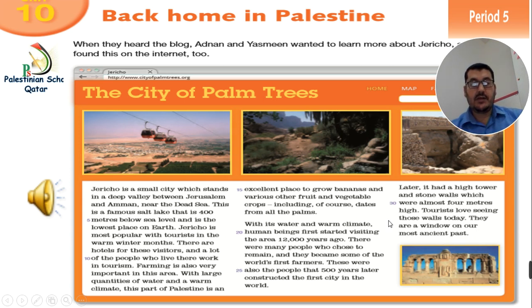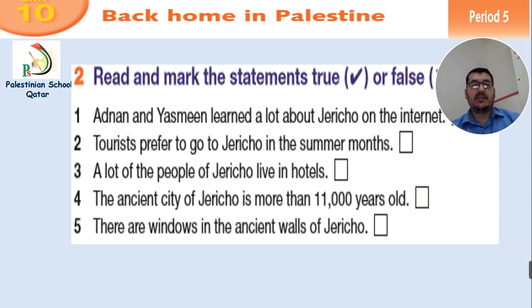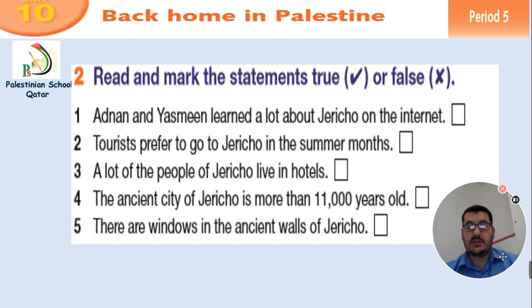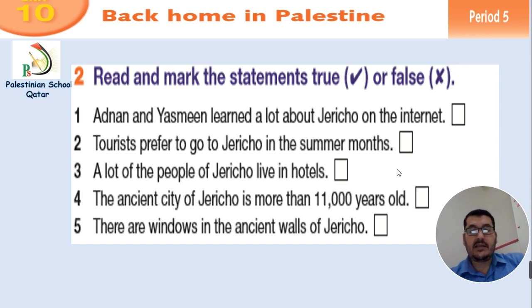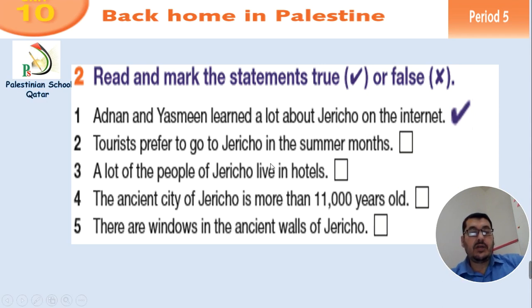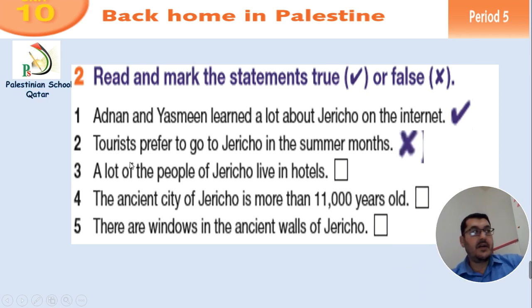After we finish listening to the passage, let's take some exercises. We have exercise number two: read and mark the statements true or false. The first one: Adnan and Yasmin learned a lot about Jericho on the internet — yes, that is true. Number two: tourists prefer to go to Jericho in the summer months — no, that is false. And the third one: a lot of people of Jericho live in hotels — that's wrong, of course.